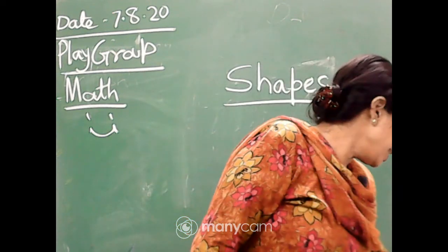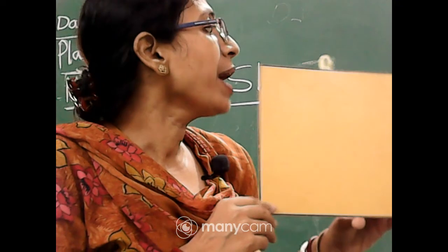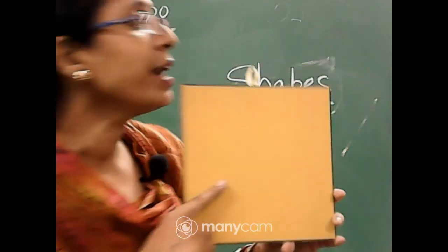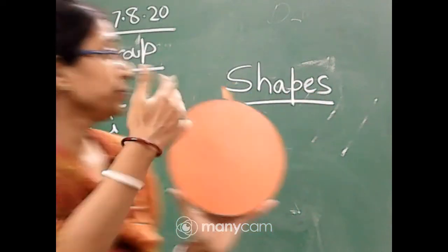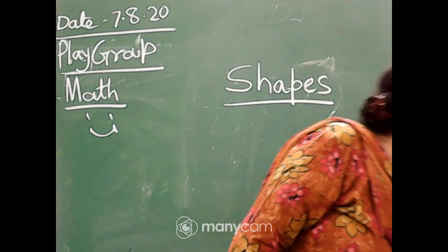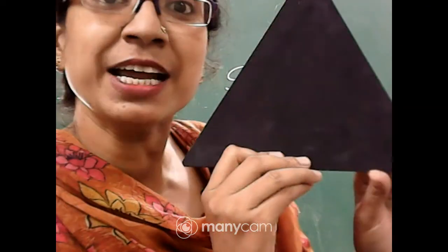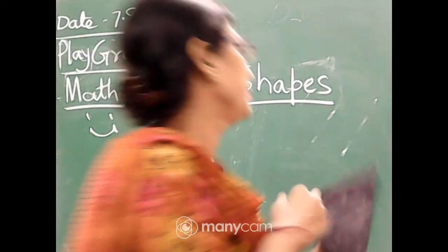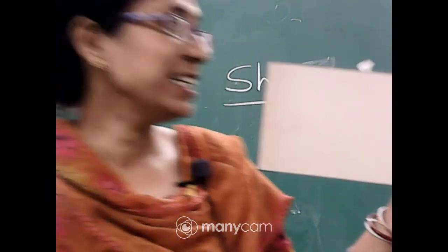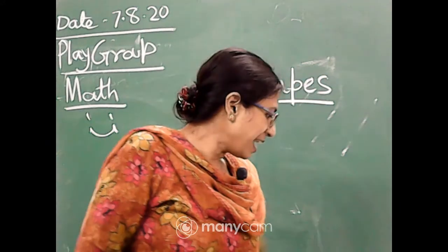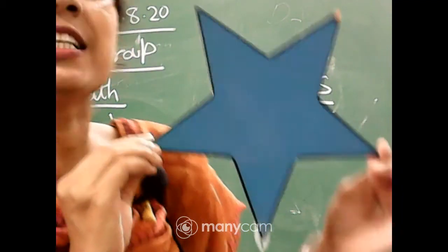So what did we learn today? Say with me: square — this is square in shape; circle — round in shape; triangle in shape — it is triangle; it is rectangle; and last one — twinkle twinkle little star — it is star shape.